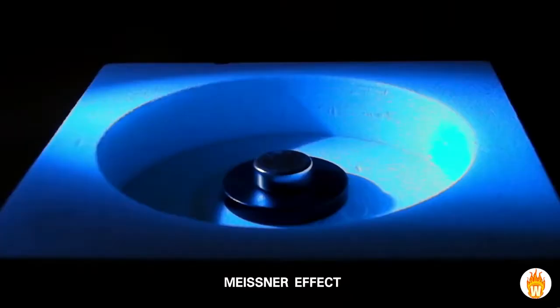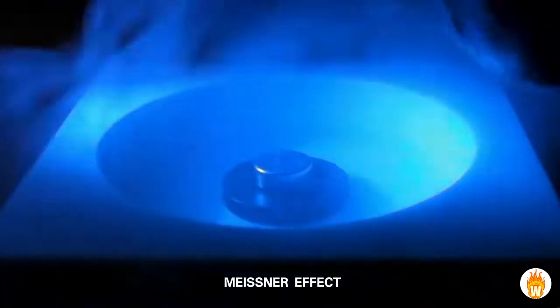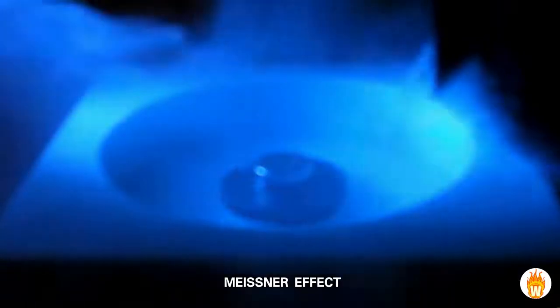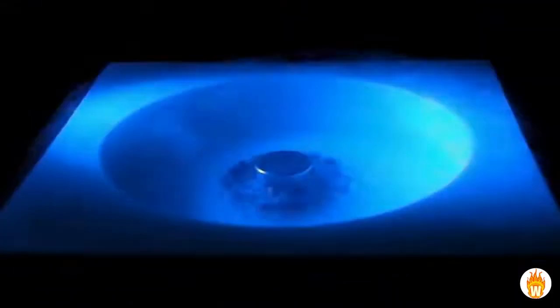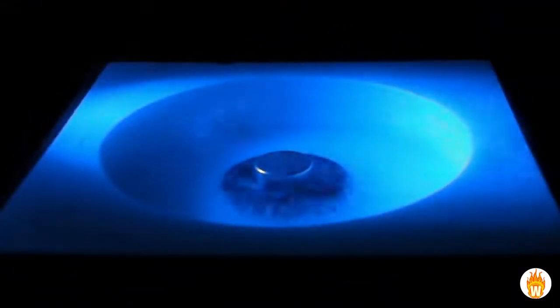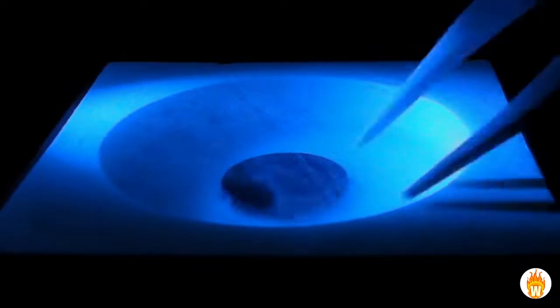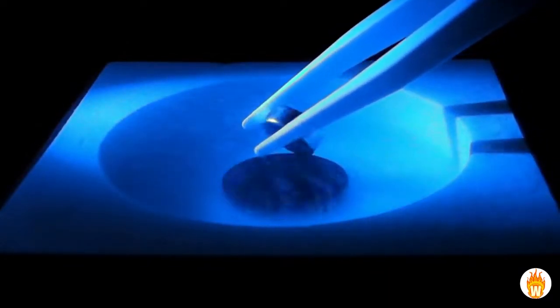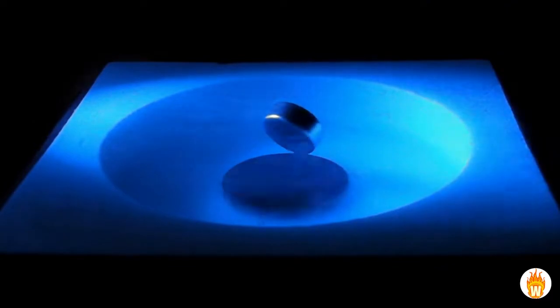When this yttrium-barium copper oxide puck is chilled down below its critical temperature with liquid nitrogen, it becomes a superconductor and magnetic field lines are expelled from its body. Magnet is able to levitate over the superconductor, but it is held in place only weakly.